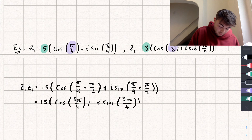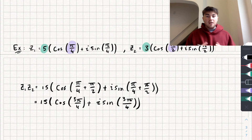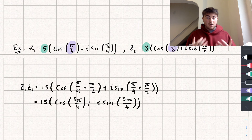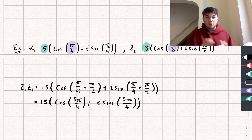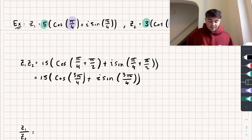Pretty easy, right? The only thing to be careful about is that if adding arguments takes you outside the range of negative pi to pi, you'll need to add or subtract multiples of 2pi to bring you back into that range. That's all you really need to be careful with.